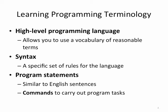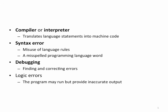Program statements are similar to English sentences, and they are specific commands to carry out specific tasks. A computer program is a set of program statements. To translate your high-level language like Java into the low-level machine language that the computer can understand, it takes a compiler or an interpreter. The compiler will go through all of the Java statements and make sure that they can be translated into machine code. If they can't be translated, it's typically because there's some problem with syntax.